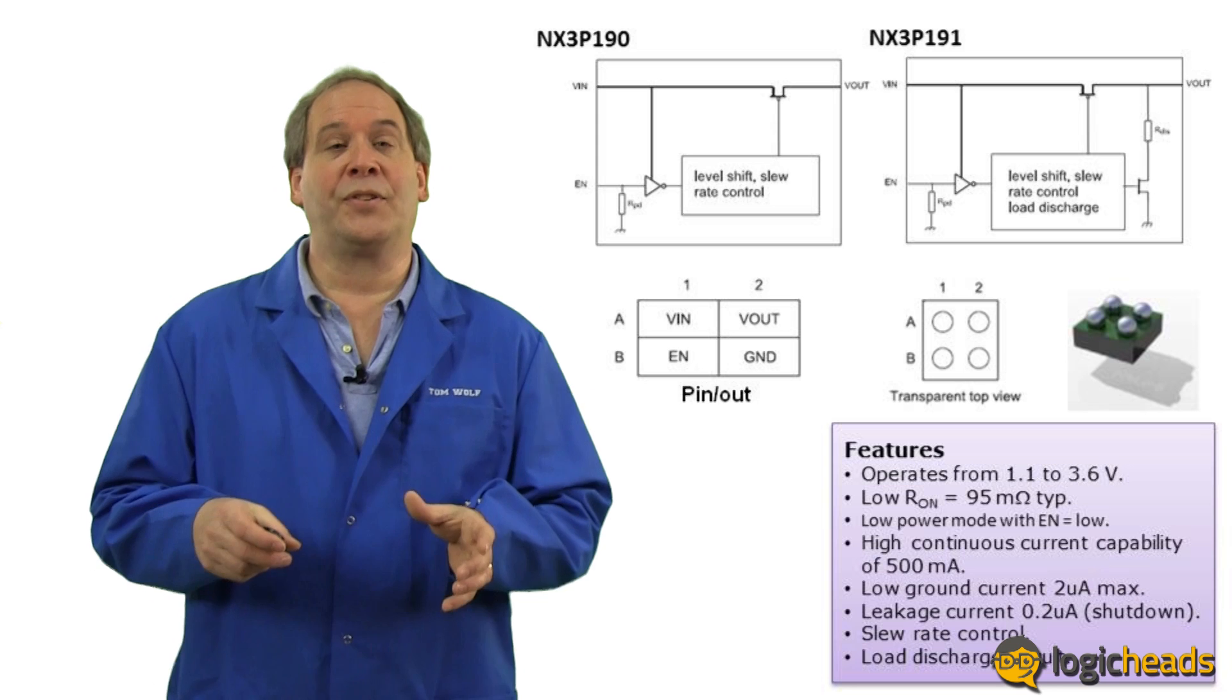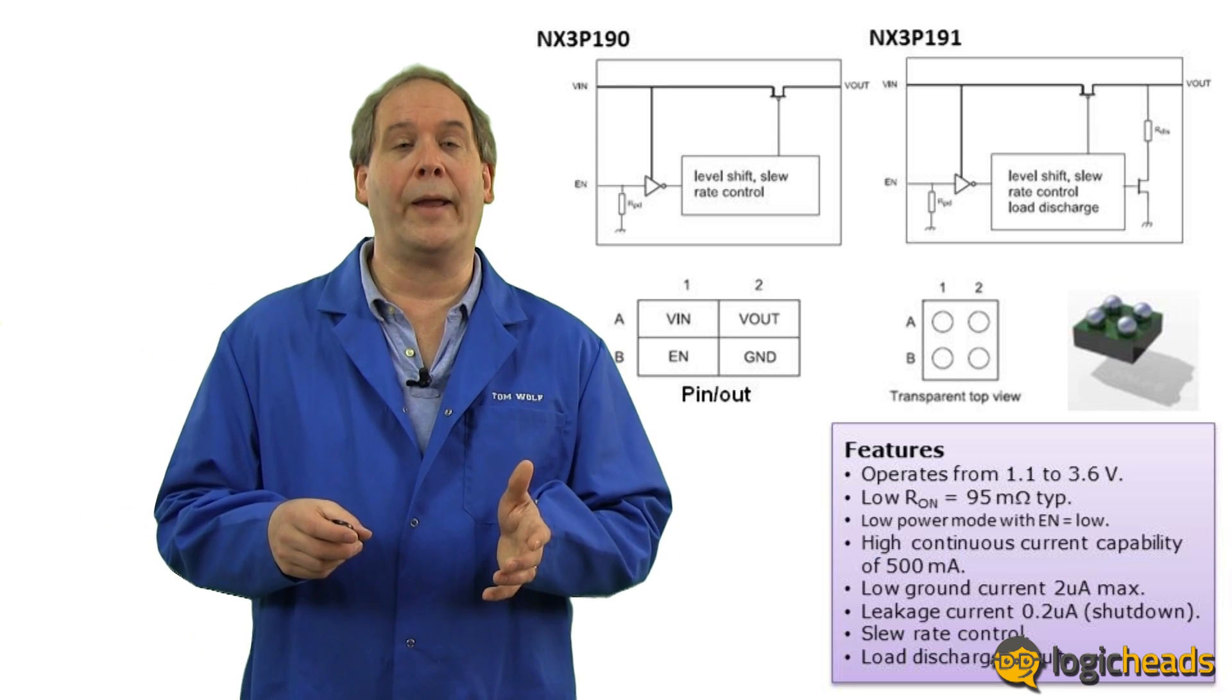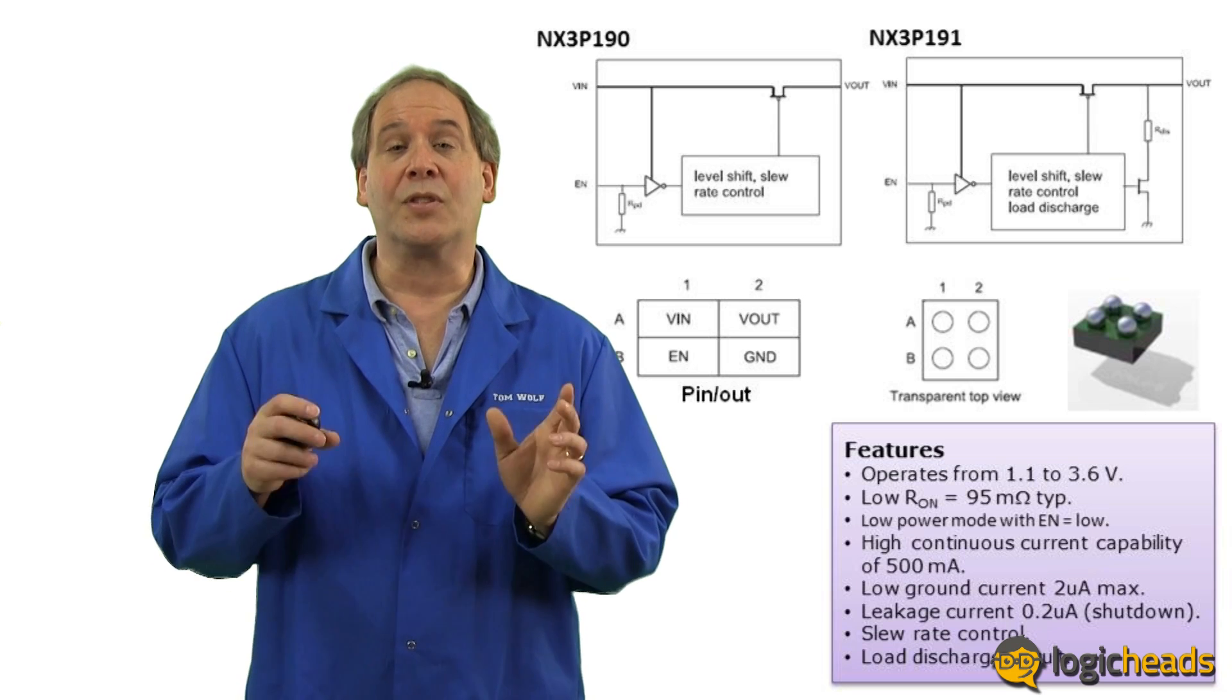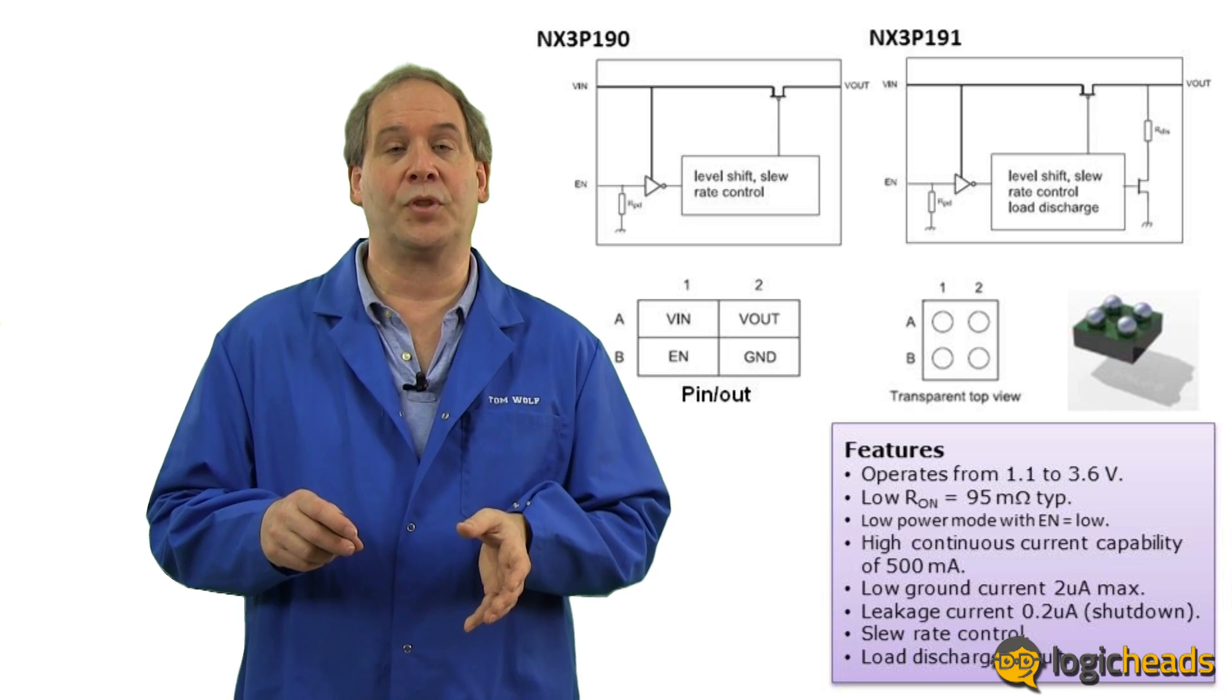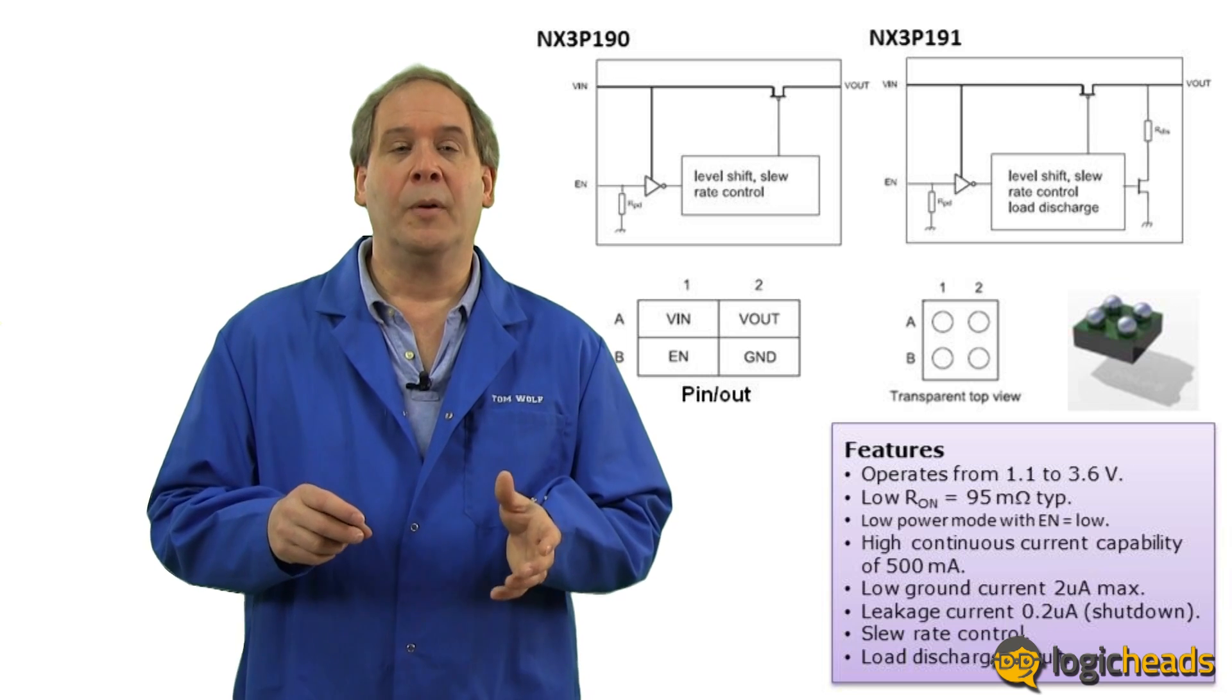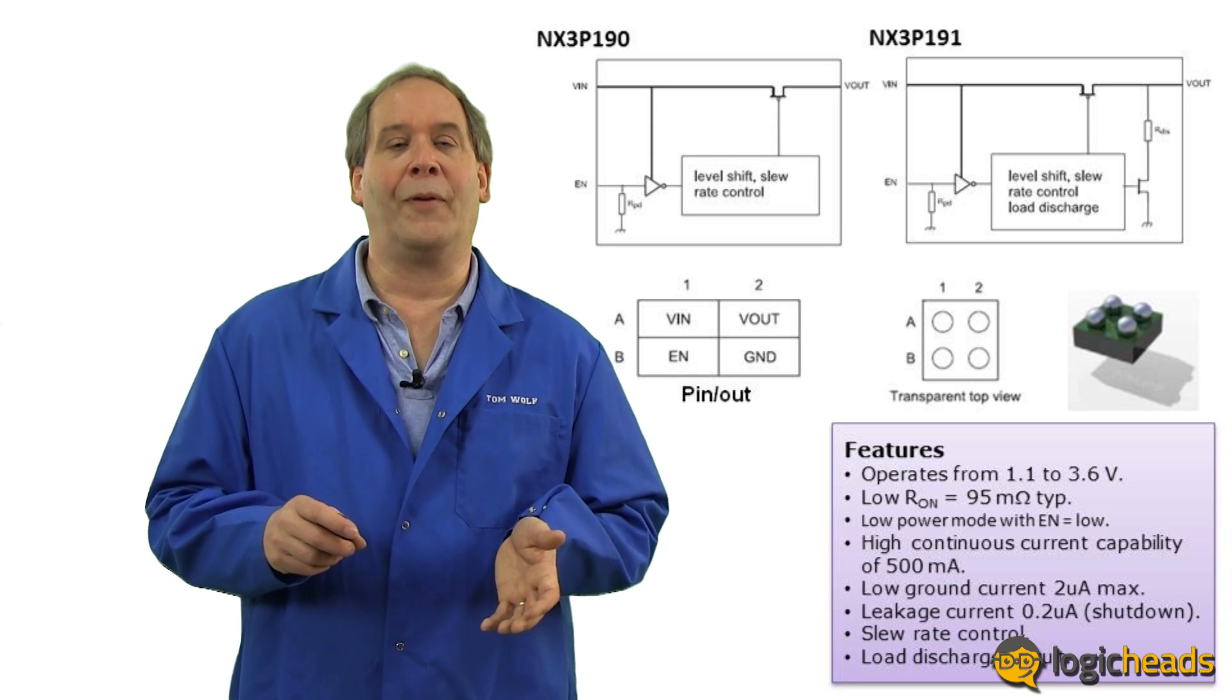So what does a load switch actually look like? This is a common example, the NX3P190 slash 191 switch. It's one of the simpler ones. It has slew rate control and an optional discharge circuit. It can switch up to 3.6 volts at a half amp, which is a good size for the various components you might want to control inside a mobile phone for example.